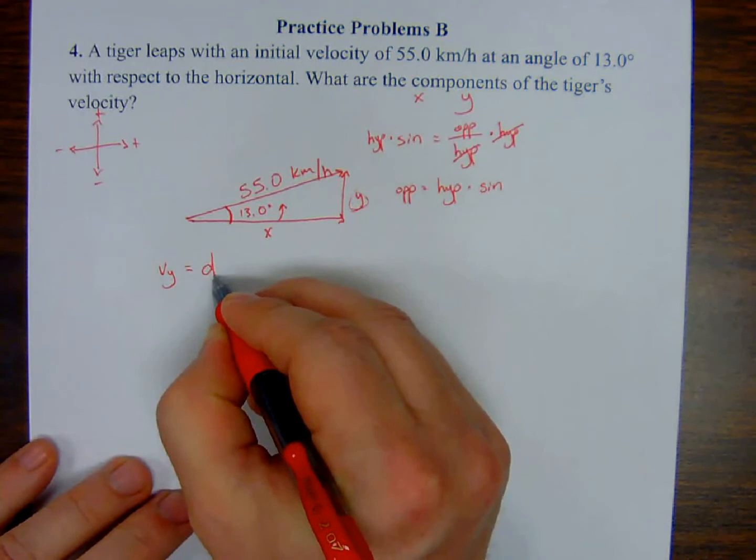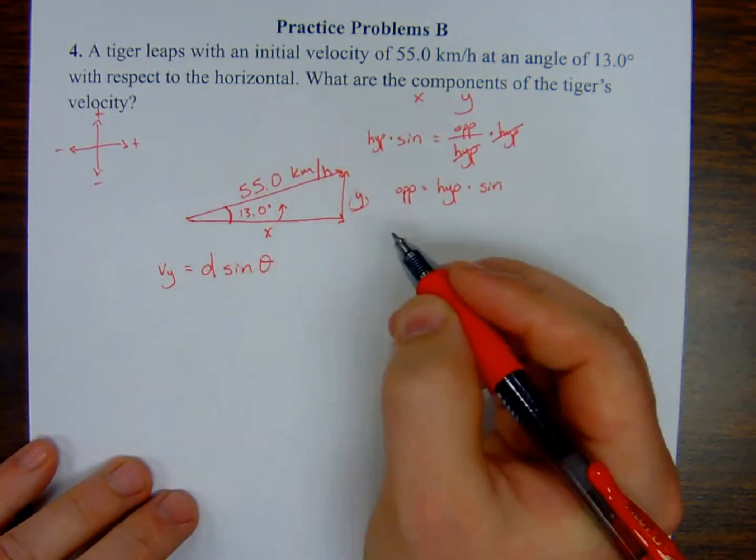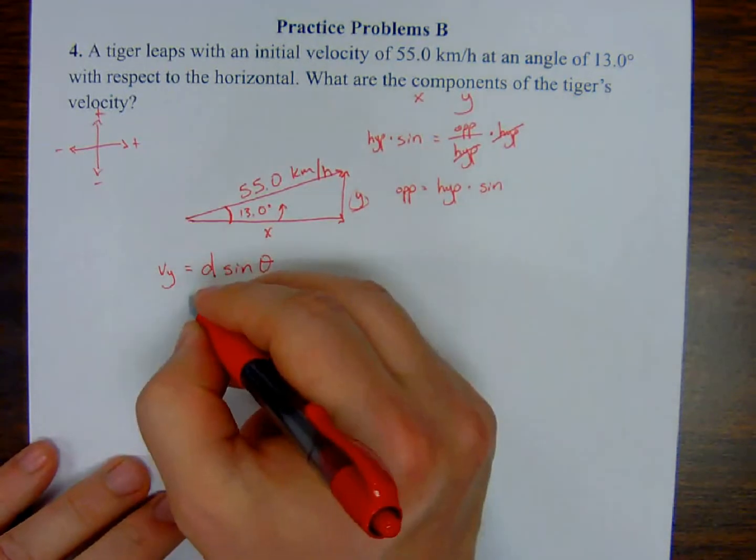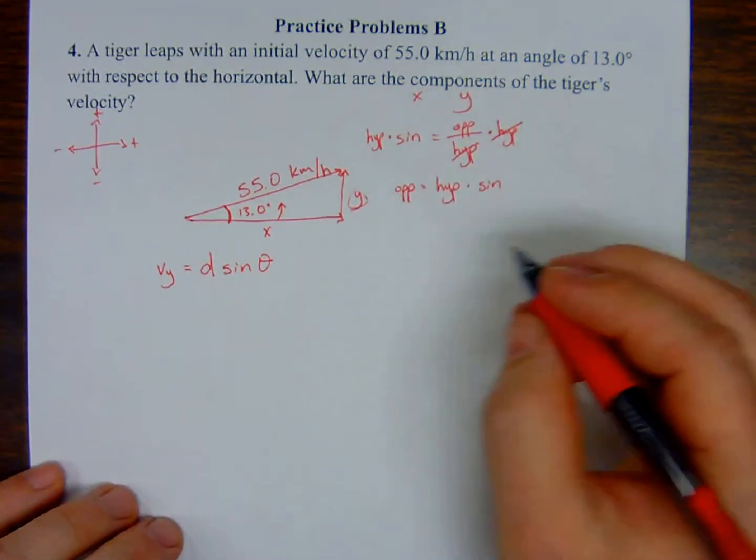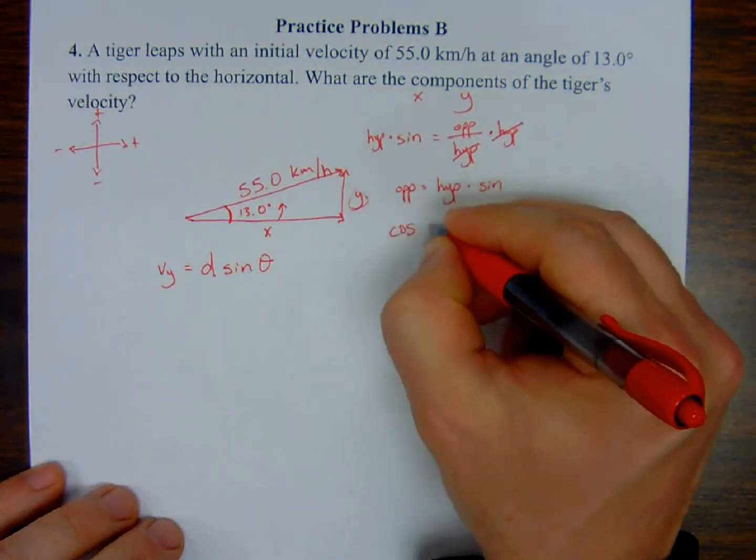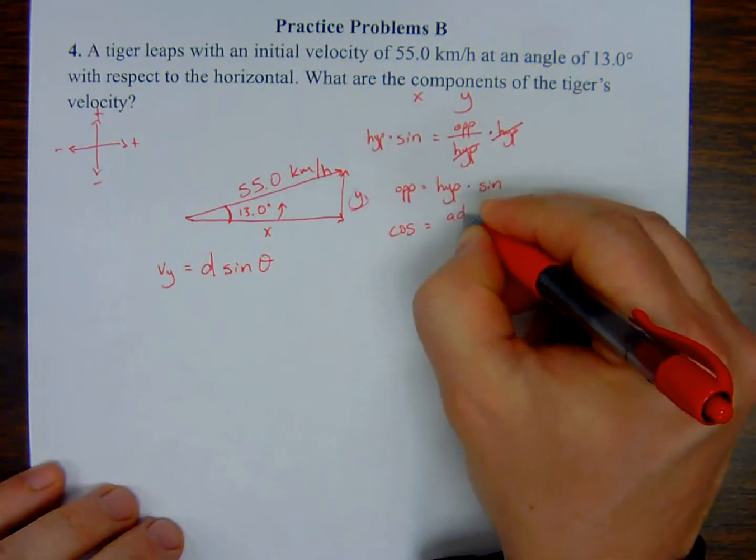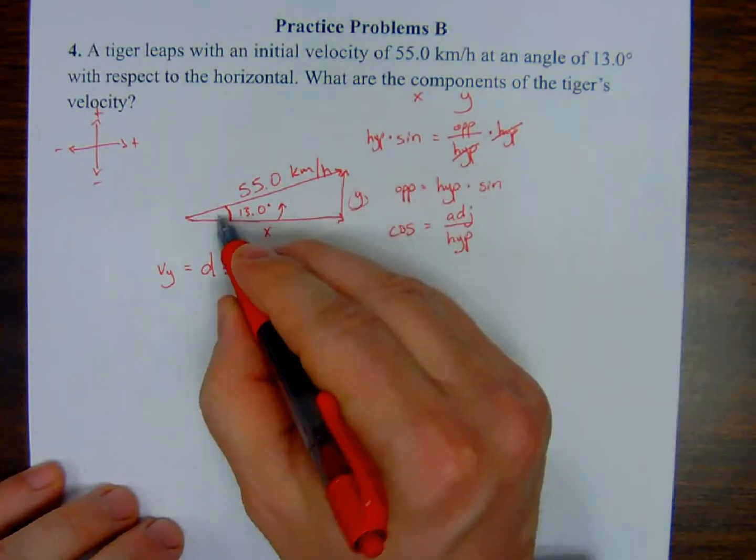And for completeness sake, let's figure out the cosine. What is cosine? Cosine is adjacent over hypotenuse. With respect to the angle, the adjacent side is the x component. Adjacent over hypotenuse. So I'm trying to solve for the adjacent side.